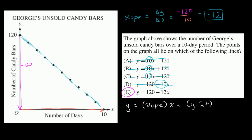Now we already figured out that the slope right over here is negative 12. And what's our y-intercept? Well that's what y is equal to when x is equal to zero. When x is equal to zero, when no days have gone by, George has got 120 candy bars. So this right over here is going to be 120.